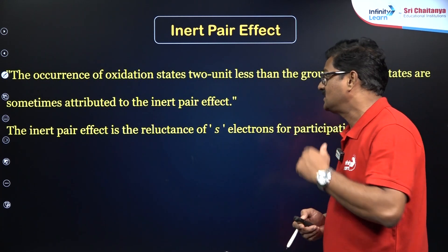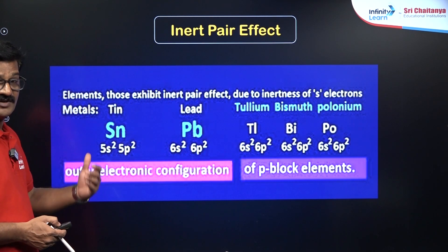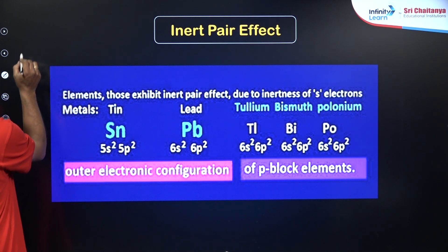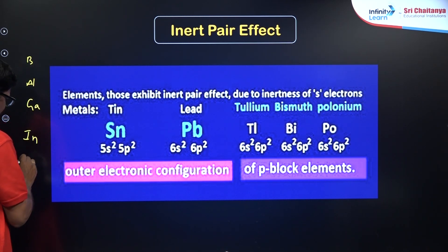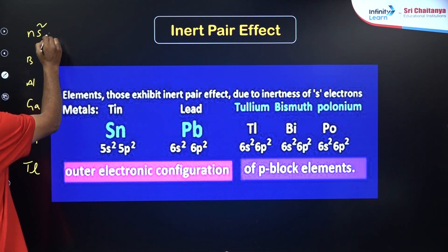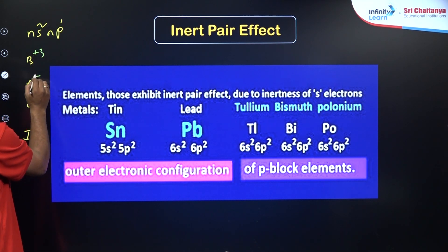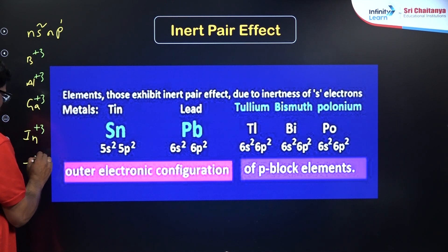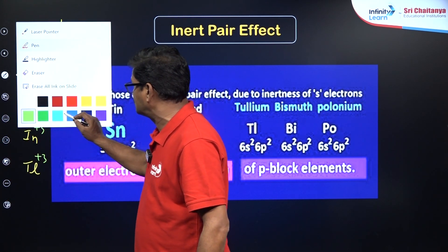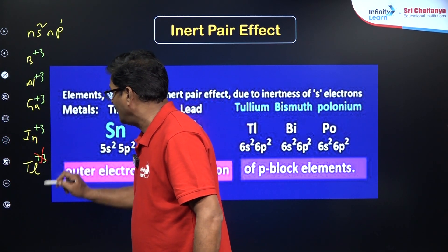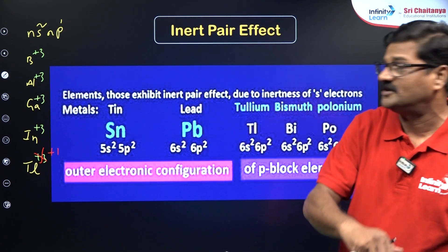The inert pair effect can be seen in tin, lead, and other elements. In group 13 — boron, aluminium, gallium, indium, and thallium — they have NS², NP¹ configuration, so they are expected to show a +3 oxidation state. But because of the inert pair effect, thallium does not show a +3 oxidation state; rather, thallium shows a +1 oxidation state because a pair of electrons is held inside and is not participating in bonding.